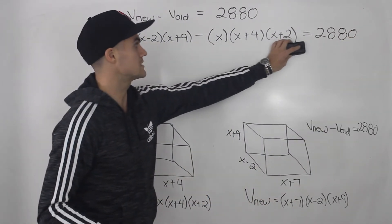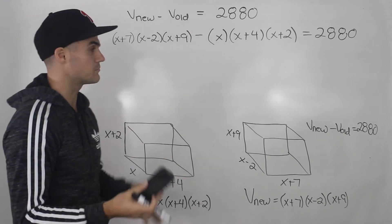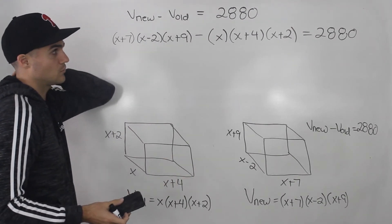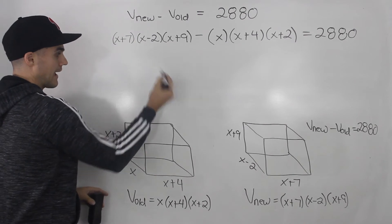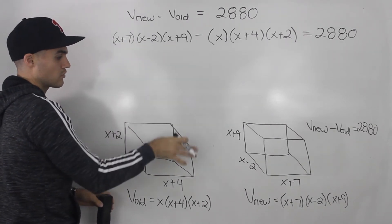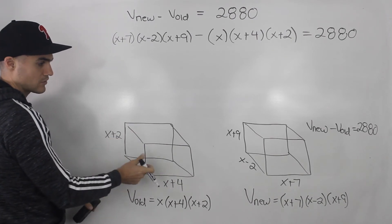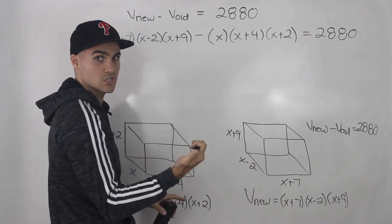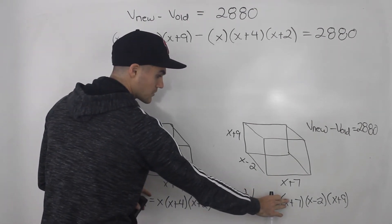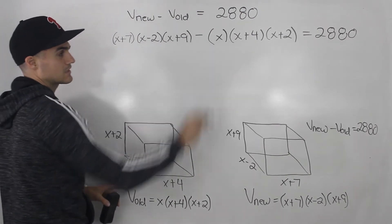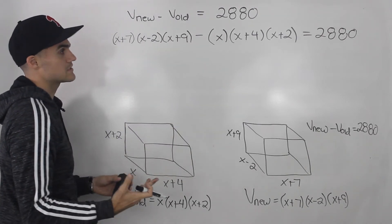At this point it's just algebra — a big polynomial equation. The tough part was setting up the expressions for three consecutive even integers, tracking how the dimensions change, and realizing you need to take the difference of the two volumes and set it equal to 2,880. Getting to this equation was the hard part. Now we expand, bring everything to one side, simplify, and factor.